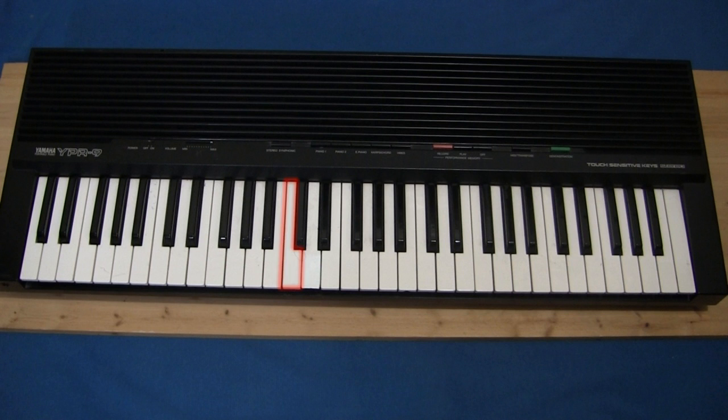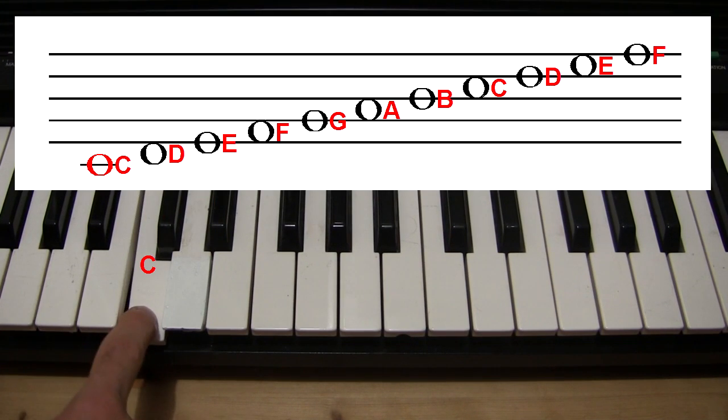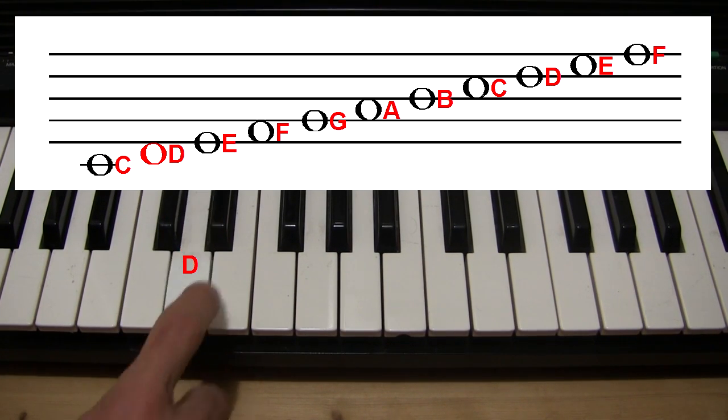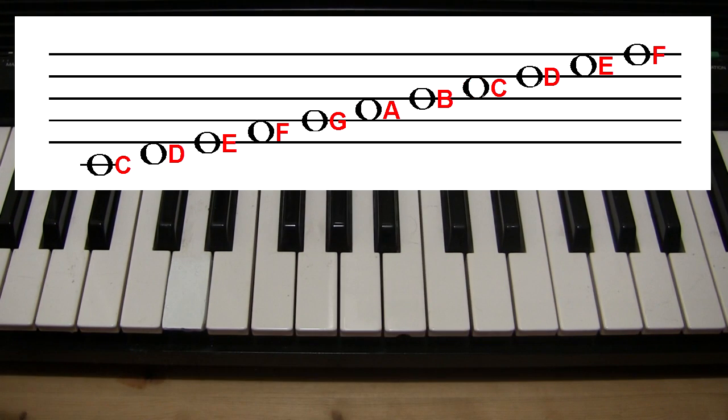Looking on a keyboard, this one here in the middle of the keyboard, just to the right of these two black ones is C. This is D, then E, F, G, A, B, and then back to another C, where it all repeats.